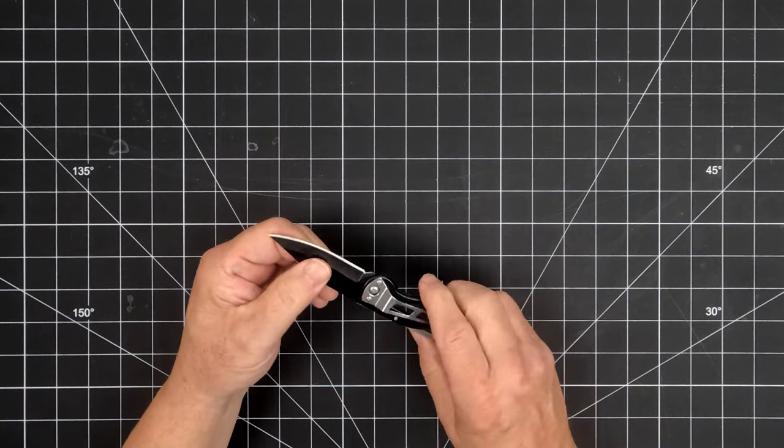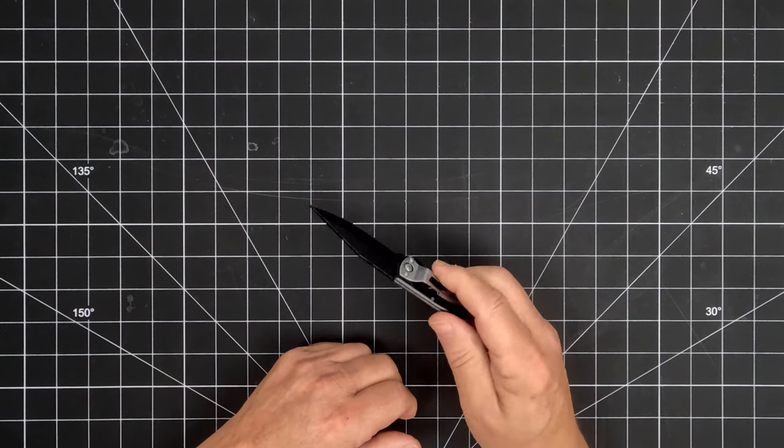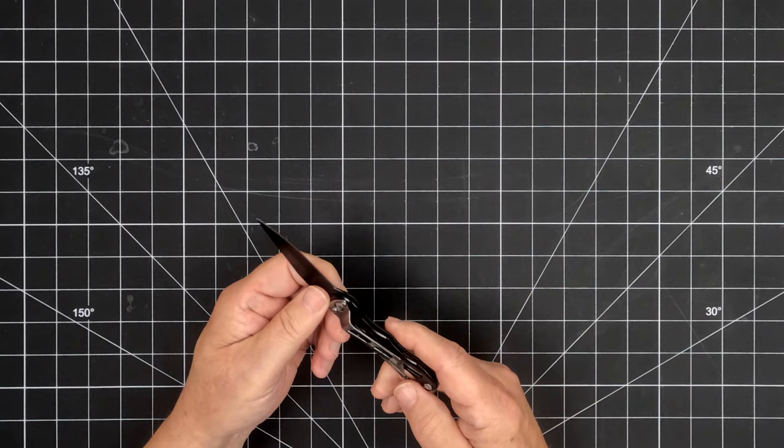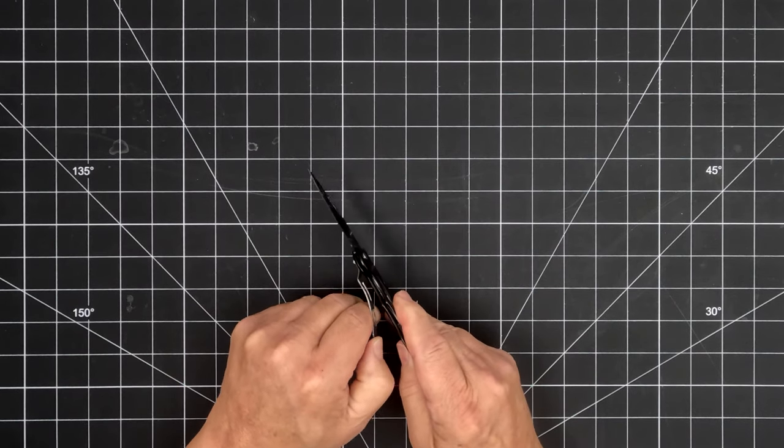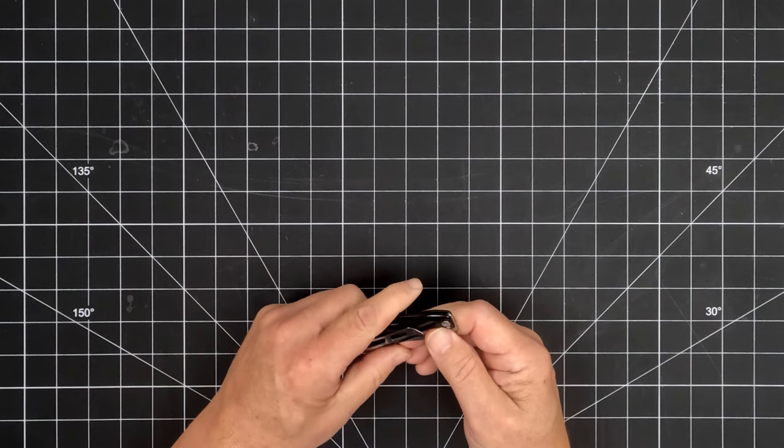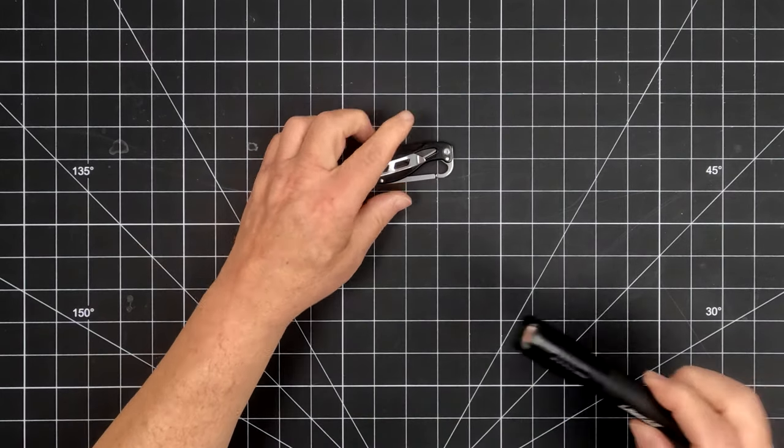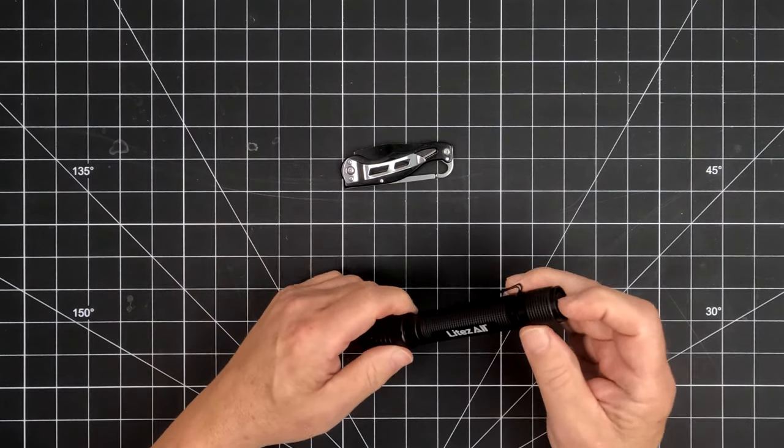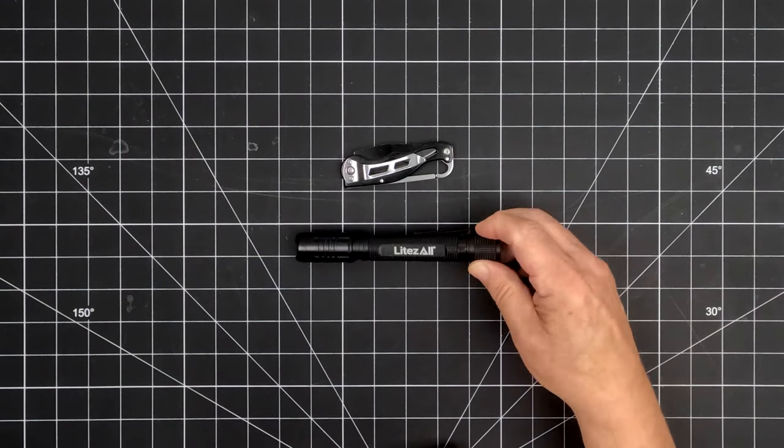The knife weighs 1.6 ounces and also features a strong metal belt clip. The clips on both accommodate thick material and both items are extremely durable and great to have in your backpack or tackle box for your next outdoor adventure.